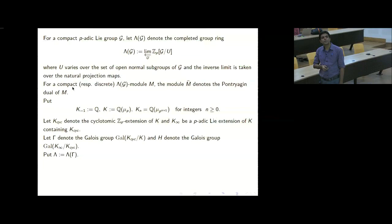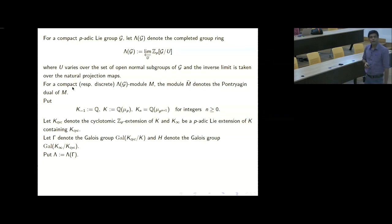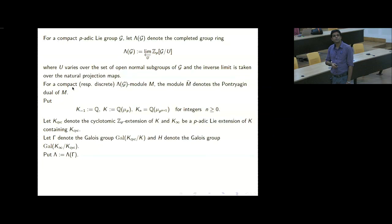For a compact p-adic Lie group G, we consider the completed group ring. Here ZP[G/U] is a group ring, and we take the inverse limit over natural projection maps to get this completed group ring, which is in fact compact. These completed group rings are nice: when G is a compact p-adic Lie group, this is a complete Noetherian ring. If G is also pro-P, it is a complete Noetherian local ring. If G has no P-torsion, then it is actually a domain — it has no zero divisors.